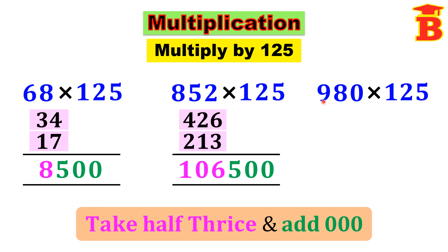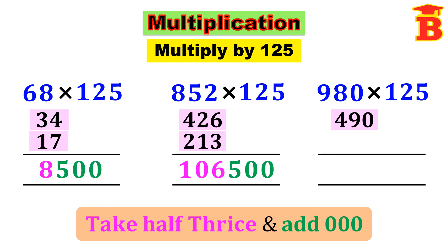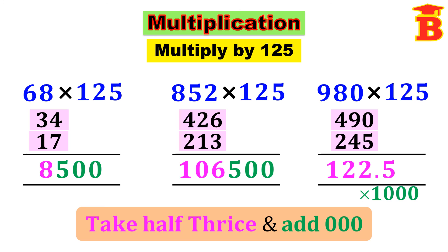Next let us multiply 980 into 125. We follow the same method: take half thrice and then add triple 0 at the back. Take half of 980, we get 490. Again taking half of 490, we get 245. Again taking half of 245, we get 122.5. Next step, add triple 0 — that means multiply by 1000. For 1 decimal point we can remove 1 zero, and the remaining 2 zeros we add at the back. So the answer is 122500.